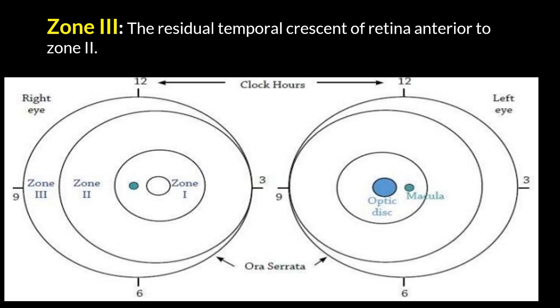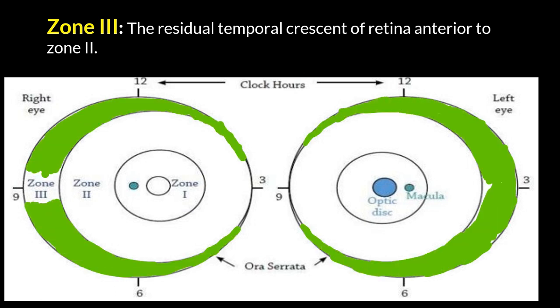Zone 3 is the residual temporal crescent of the retina present from the edge of zone 2, or anterior to zone 2.